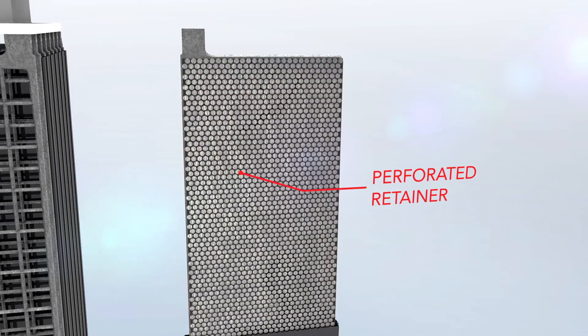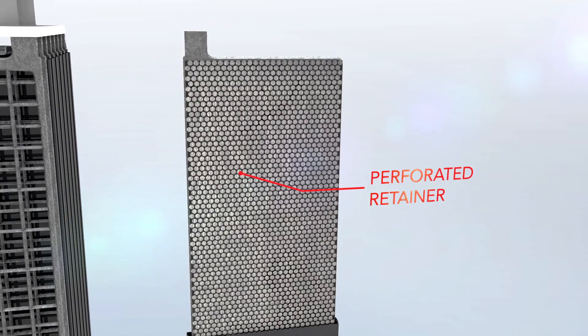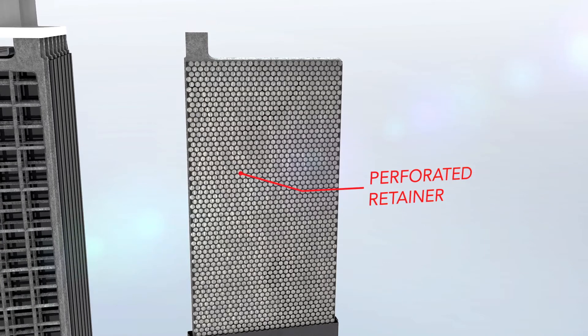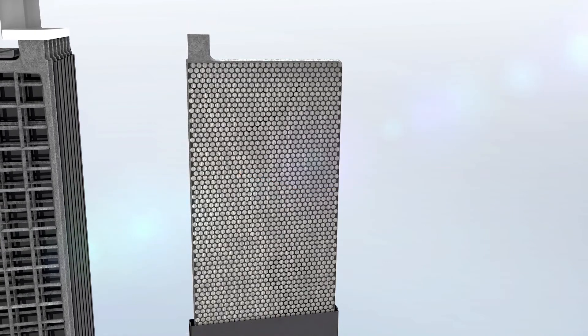This retainer holds the expansion mat in place without interfering with the electrolyte flow to the active material. The non-perforated sides extend battery life by preventing shorts between the sides of the plates.